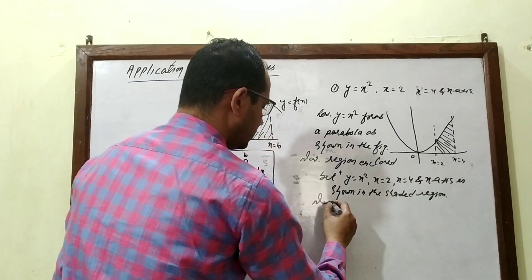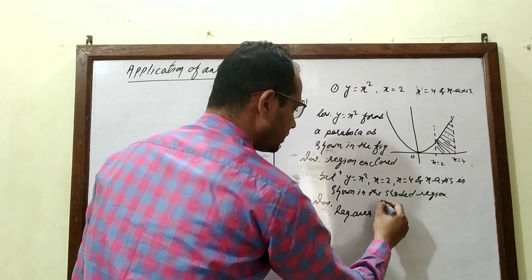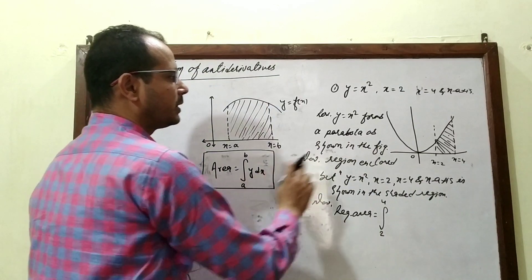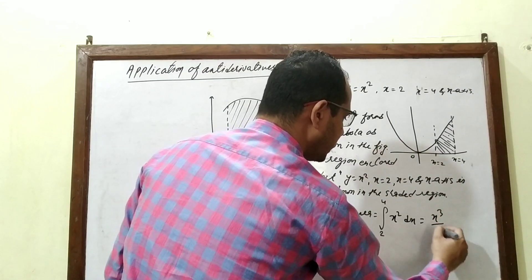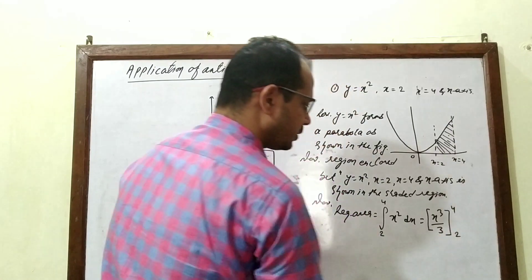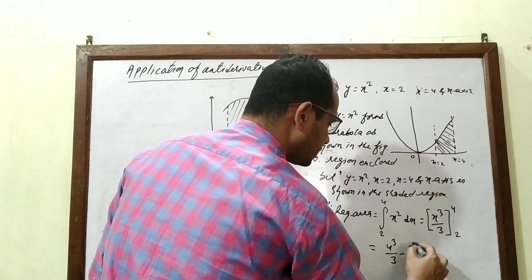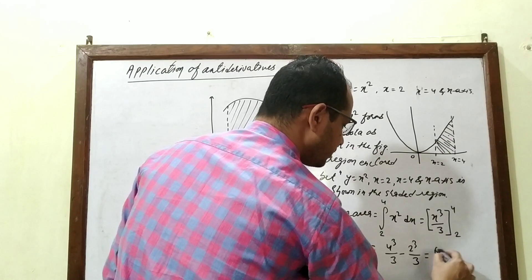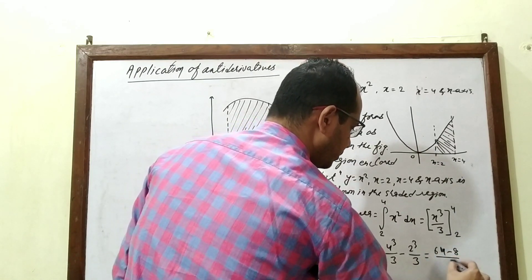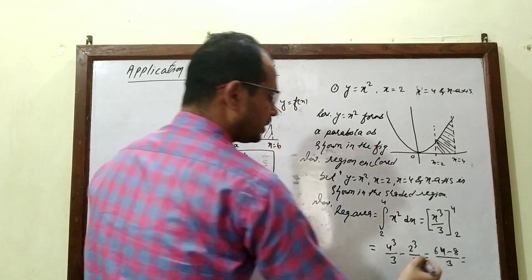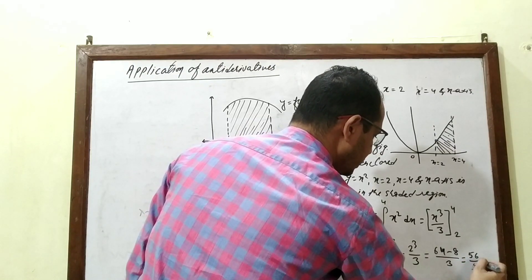Now, the required area is the definite integral from 2 to 4 of y dx = integral from 2 to 4 of x² dx. Integrating, we get x³/3 evaluated from 2 to 4. That gives 4³/3 − 2³/3 = 64/3 − 8/3 = 56/3 square units. This is the required area.